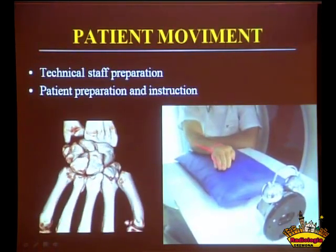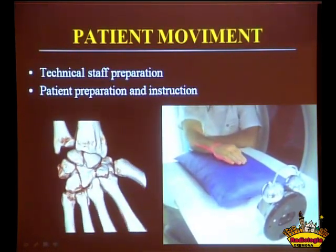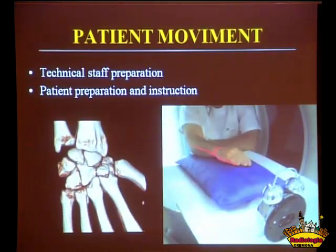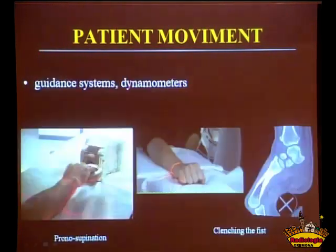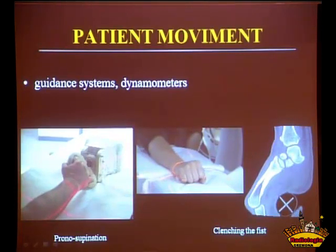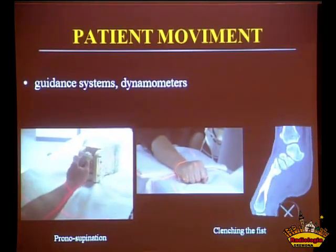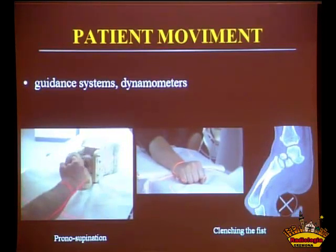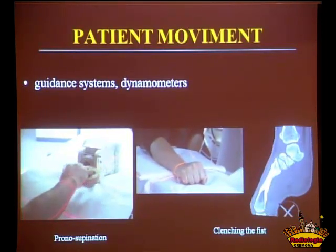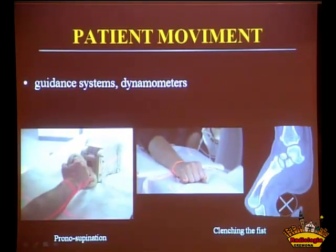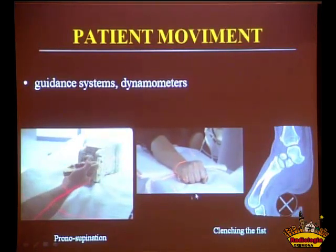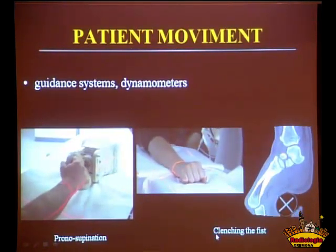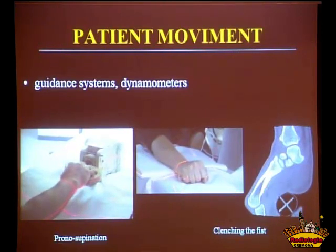There's a little clock right there. The patient pays attention to the clock, and then the acquisition is timed. Once the patient has finished the movement, we just stop the acquisition. We can couple that with guidance tools and stress testing, as shown in these videos with this tool for pronosupination and this clenching fist study, which is pretty interesting for carpal pathology.